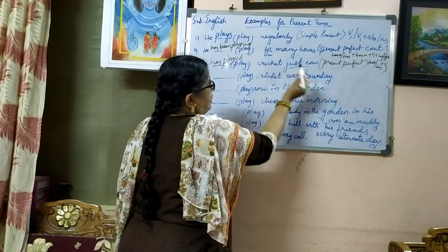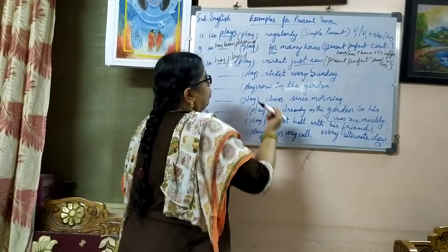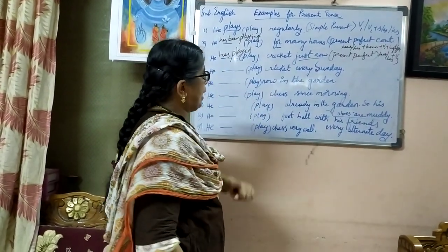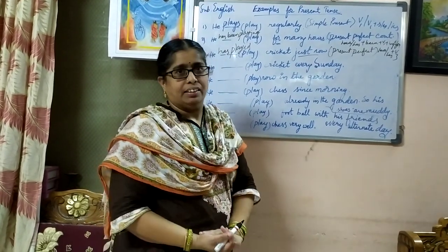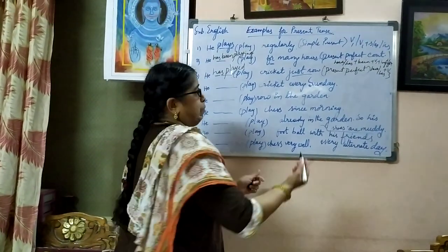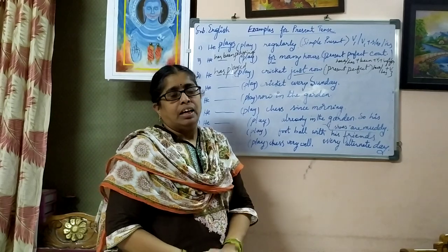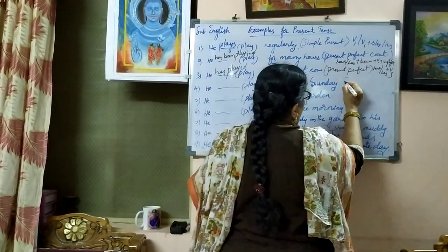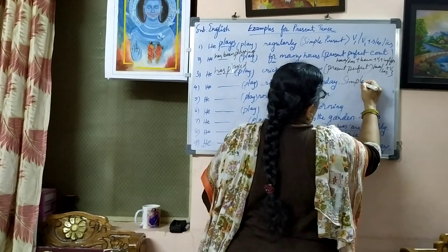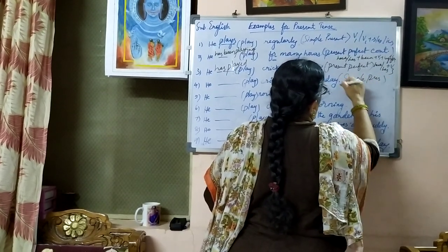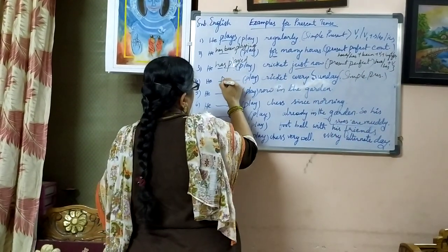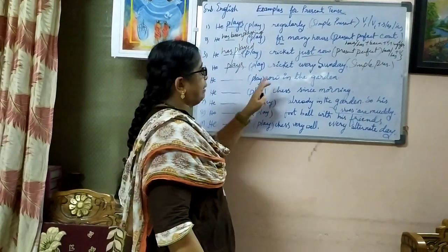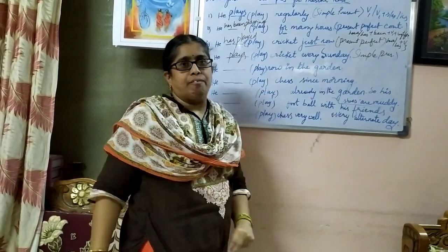Now the fourth one: he dash play cricket every Sunday. Every Sunday means it is a regular based action. That's why, once again, here comes simple present tense. The verb form is 'plays'. He plays cricket every Sunday.